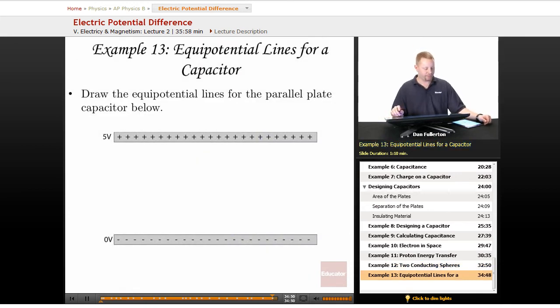Equipotential lines for a capacitor. Draw the equipotential lines for the parallel plate capacitor below. Well, the first thing I'm going to do is it's probably easier to draw the electric field first, going from positive to negative. So I'll put in some electric field lines first, in green here. Electric field is constant between those.